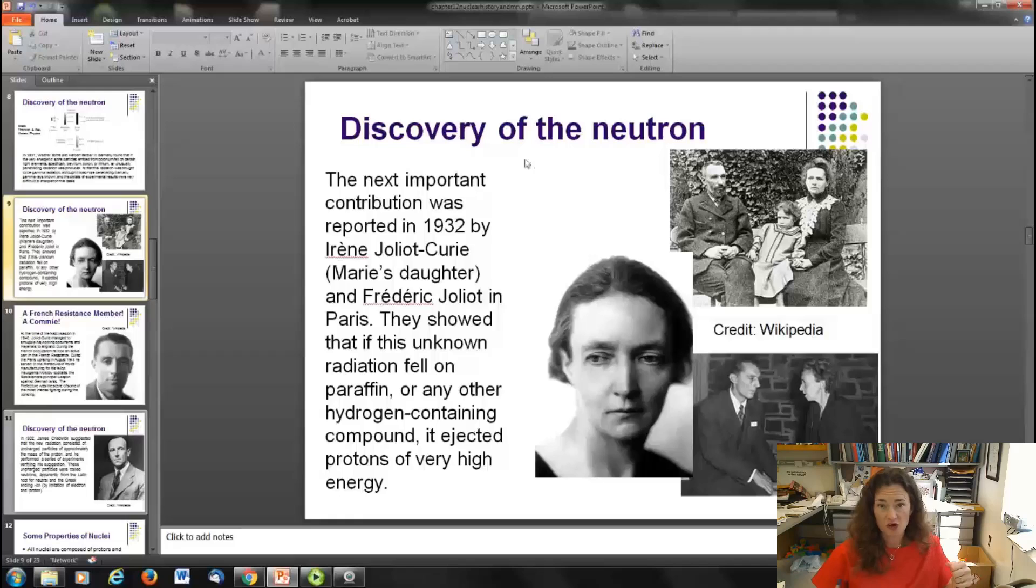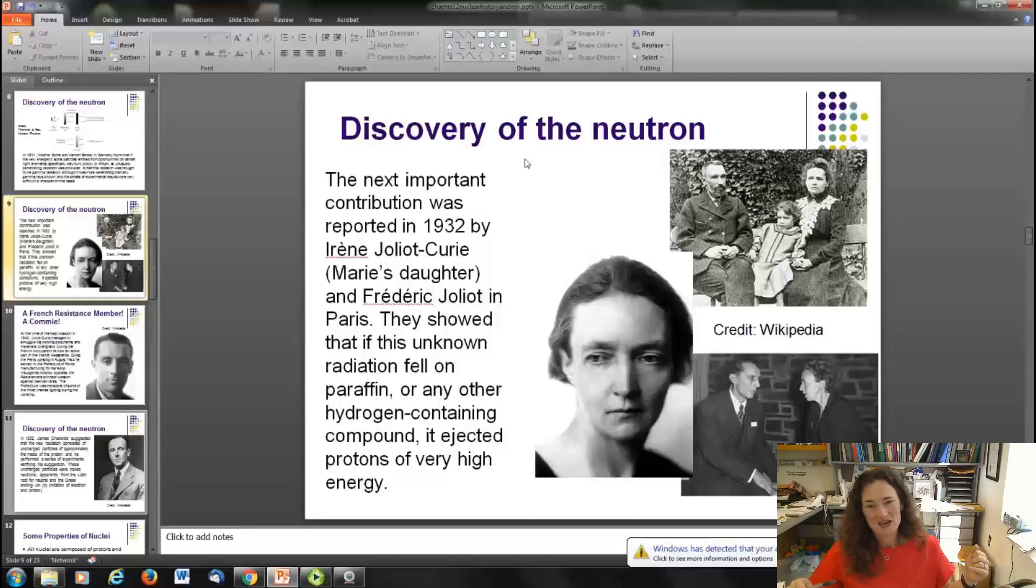The next important contribution in the discovery of the neutron actually came from the Curie's daughter, Marie and Pierre Curie's daughter, Irene Joliot-Curie and Frederic Joliot in Paris. They showed that if this unknown radiation fell on paraffin, wax, or any other hydrogen-containing compound, then it actually ejected protons of very high energy.